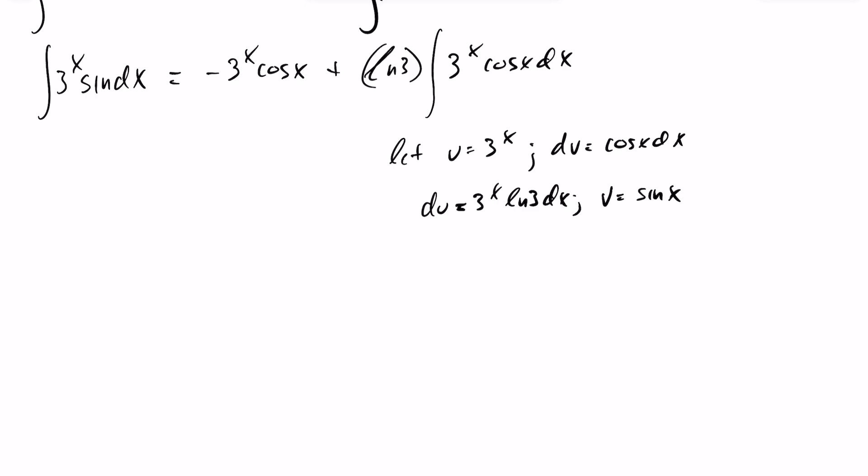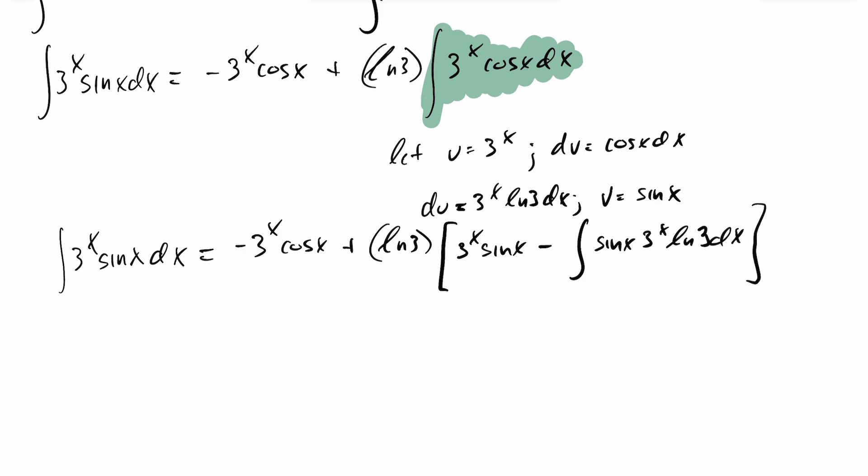So now again, the integral of 3^x sin(x) dx is equal to negative 3^x cos(x) plus ln(3) times, I can replace the integral of 3^x cos(x) dx with uv, which this time will be 3^x sin(x) minus the integral of v, which is sin(x) du, which is 3^x ln(3) dx. All right, we're getting there.